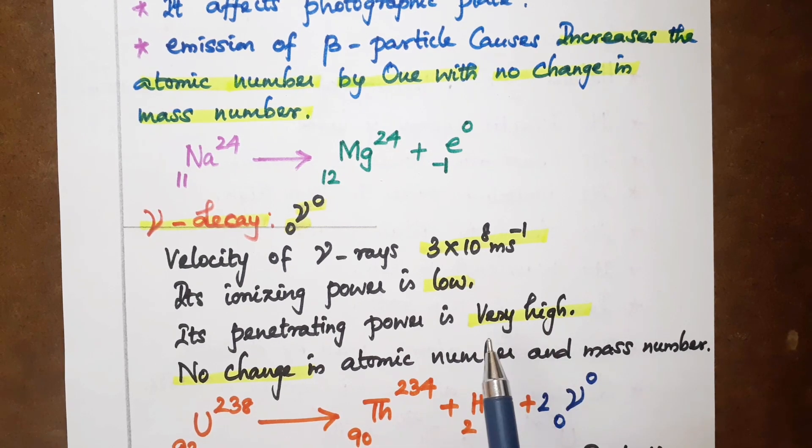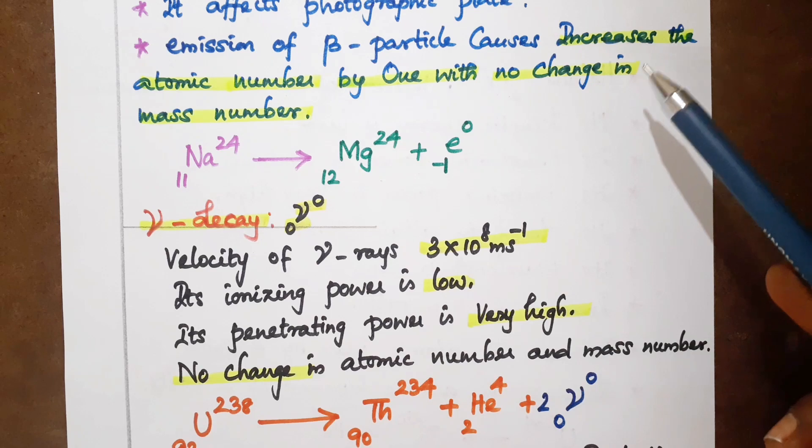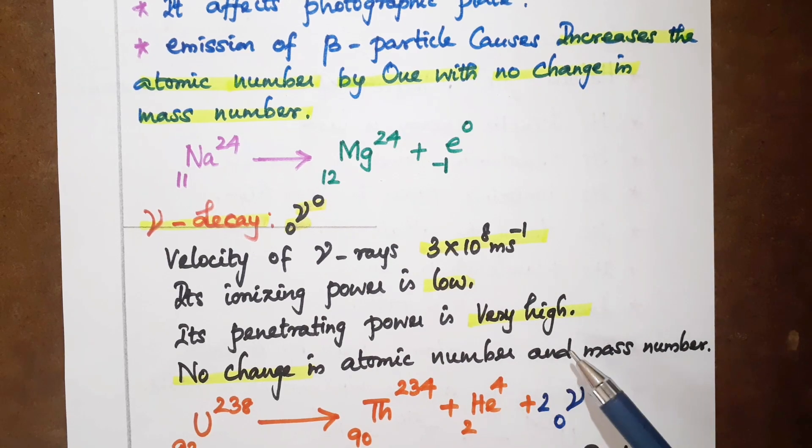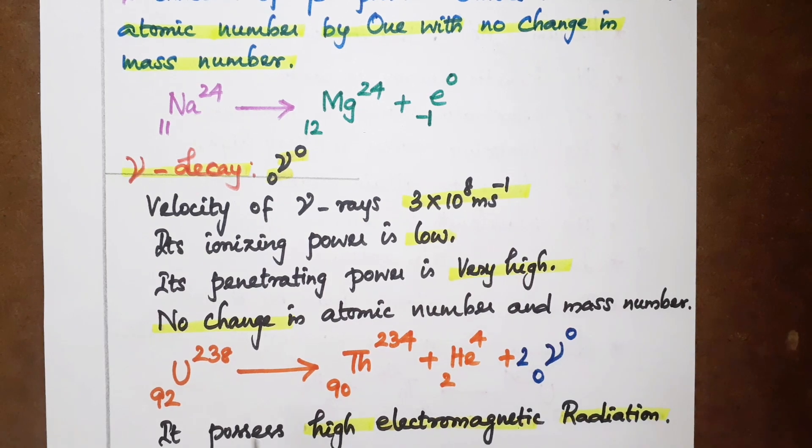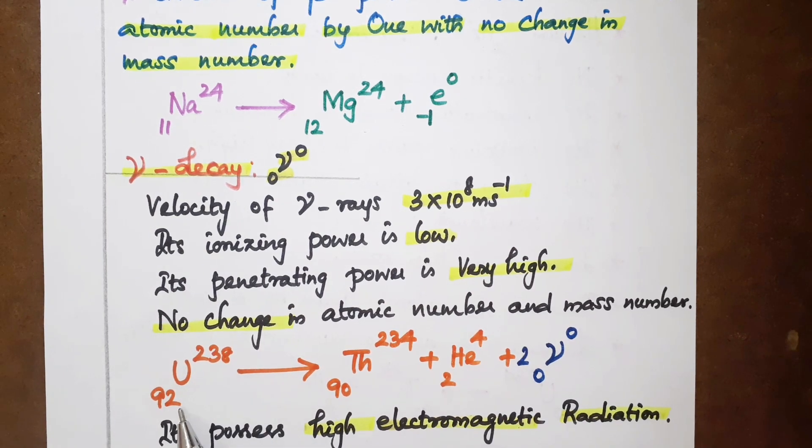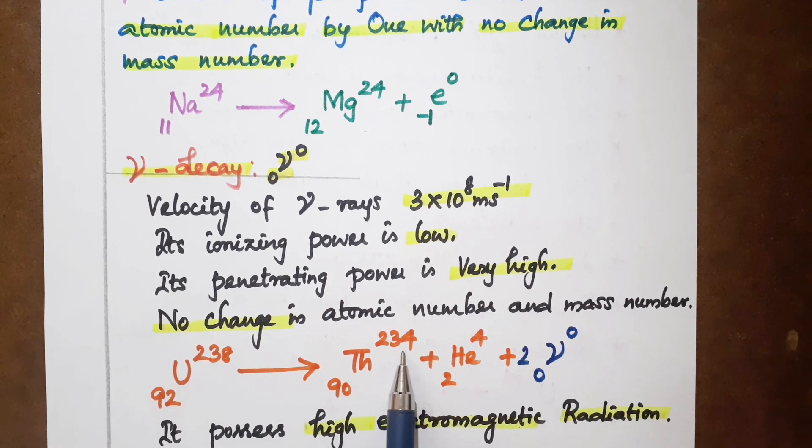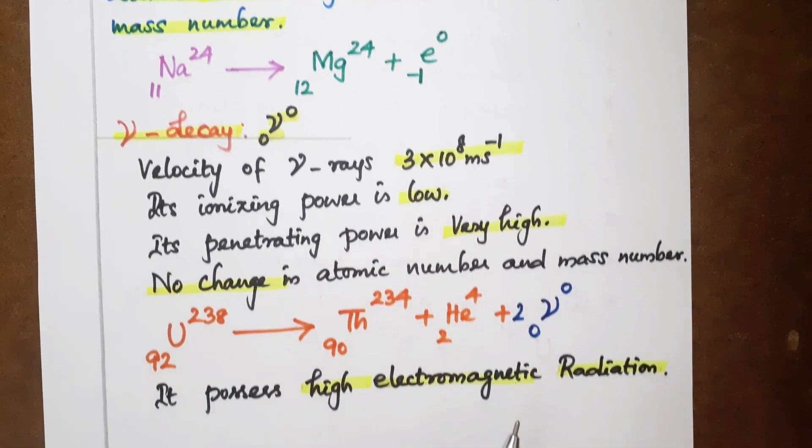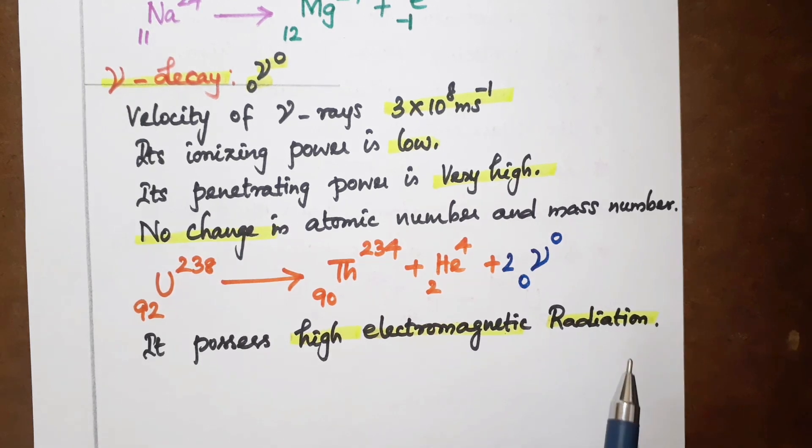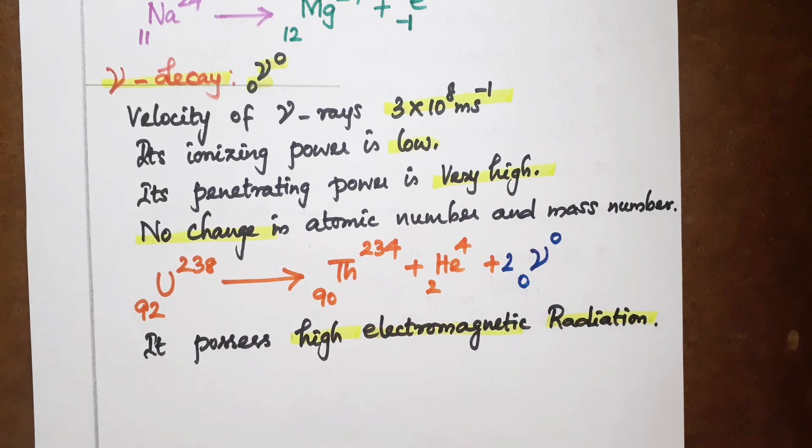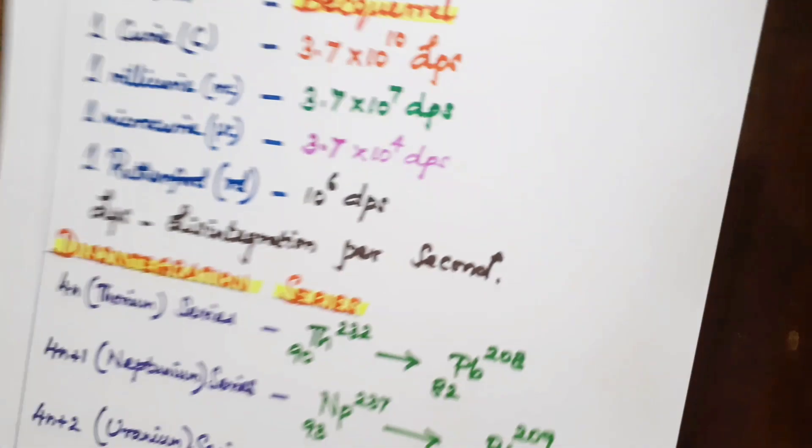The penetrating power is very high for gamma, whereas beta is high and alpha is low. Example: uranium U-238-92 gives thorium Th-234-90 plus helium He-4-2 plus gamma. It possesses high electromagnetic radiation. These are gamma rays and radioactivity decay modes.